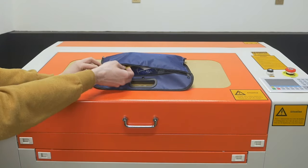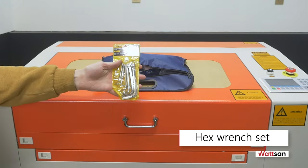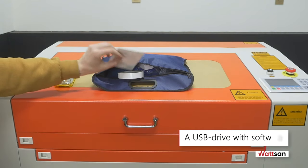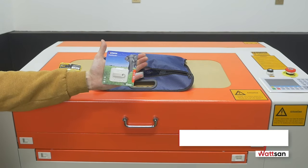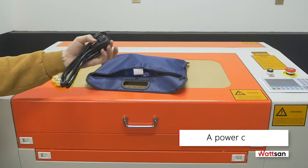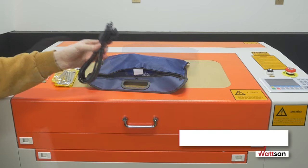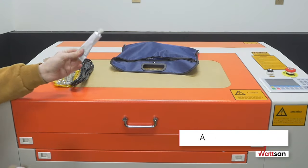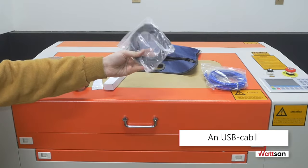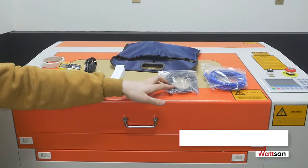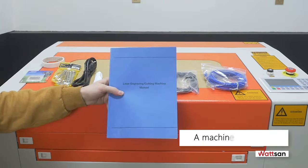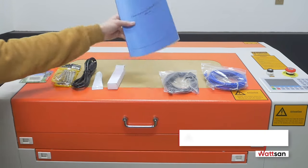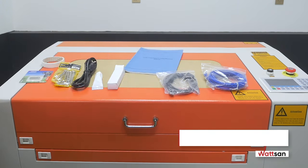The blue bag contains a hex wrench set, a USB drive with software, a power cable, a tube with sealer, and a USB cable to connect the machine to the computer. A machine certificate contains information about the machine's installation and operation.